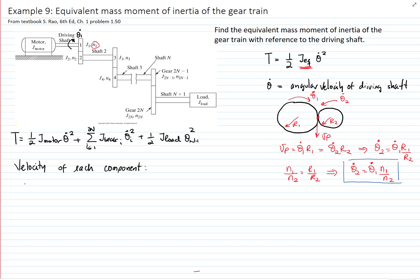So let's determine the velocity of each component to expand that summation. First we have the motor, and gear 1 has the same angular velocity — which is the one we want for the equivalent system — so we write theta dot. For shaft 2 and shaft 3 they are related to the first one by the ratio of the teeth. Then we have gear 4 and gear 5, which also share the same angular velocity, with shaft 2 carrying gears 2 and 3, and shaft 3 carrying gears 4 and 5.